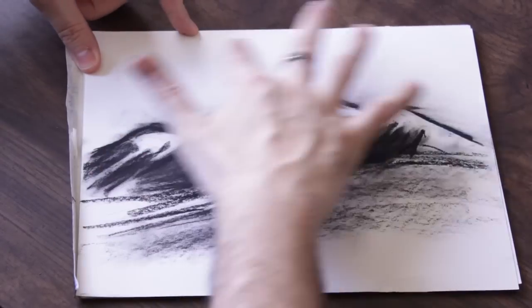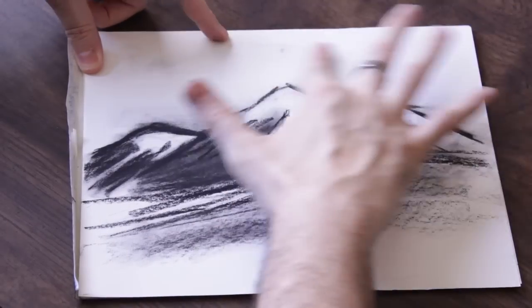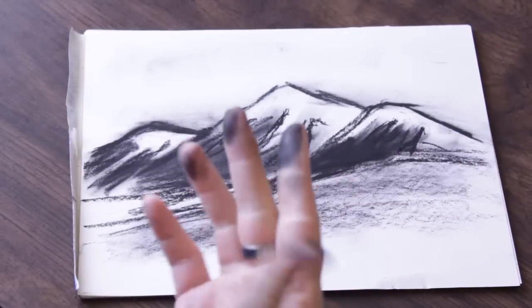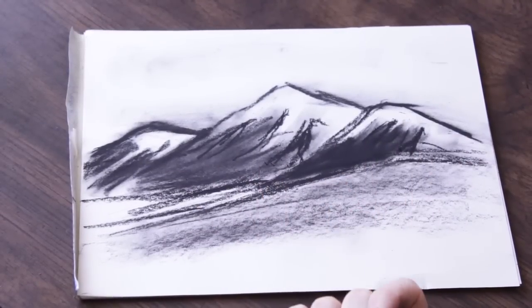Maybe come up here and do some clouds. If you got some leftover charcoal on your fingers you can just kind of get in there and shade in the sky. But there you have it. Just a simple technique to help your charcoal mountain ranges look a little better. And if you have any questions feel free to ask.